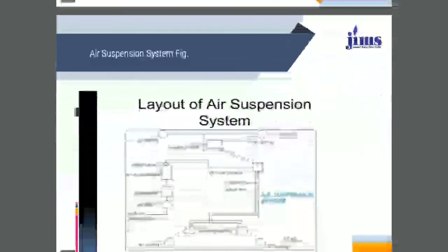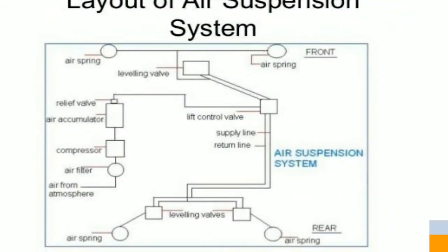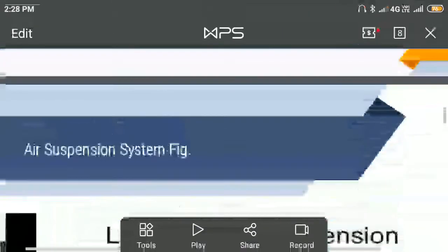The layout of the air suspension system includes the following components: air spring, leaf valve, air actuator, and compressor. These are the main components used in the air suspension system. Air is drawn from the atmosphere through an air filter. There is also a lift control valve, a supply line, a return line, a leveling valve, and an air spring. This is the system diagram.